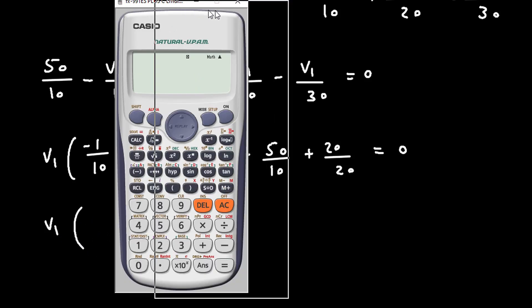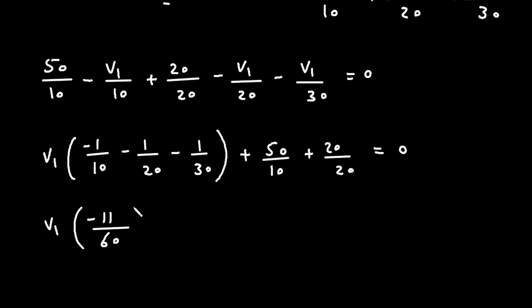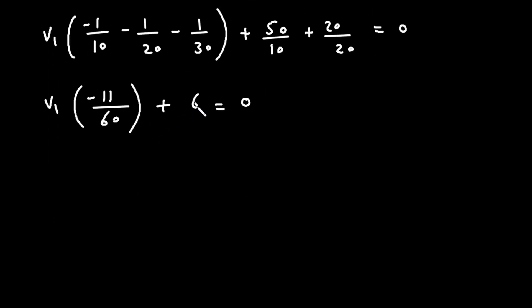The bracket terms combine: minus 1/10 minus 1/20 minus 1/30 equals minus 11/60. The constant terms give 5 plus 1 equals 6. So V1 times (minus 11/60) plus 6 equals 0. Taking the constant to the right side: V1 times (minus 11/60) equals minus 6. The two negatives cancel, giving V1 equals 6 divided by (11/60).